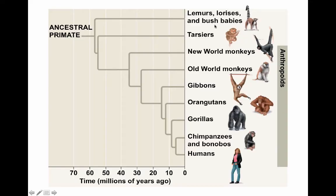Here we see a general primate phylogeny: prosimians, then tarsiers, then the anthropoids. We have the monkeys, and you can see monkeys are not monophyletic. The new world monkeys branched off first, then the old world monkeys. But the old world monkeys are more closely related to apes — so gibbons onward are all apes — and old world monkeys are actually not as closely related to new world monkeys.